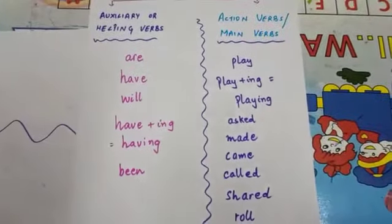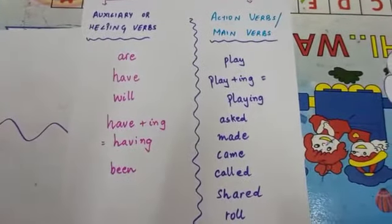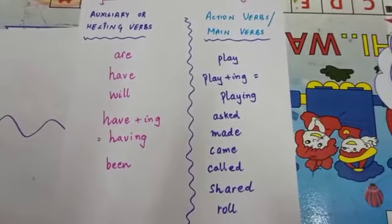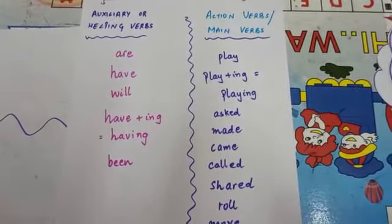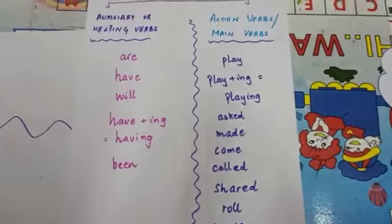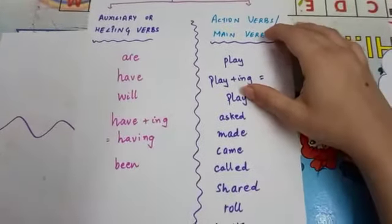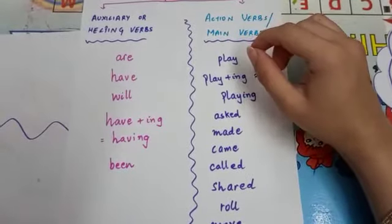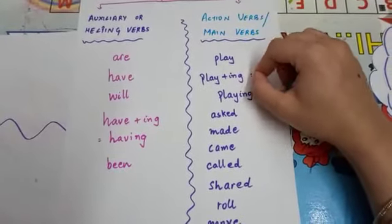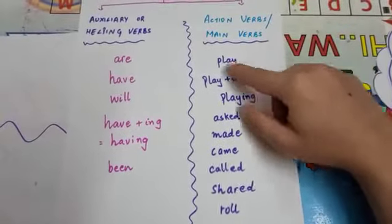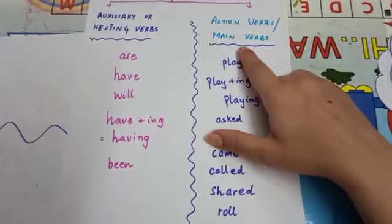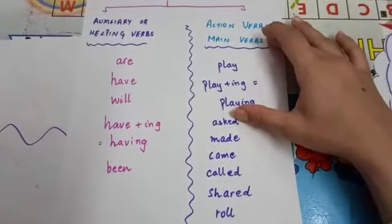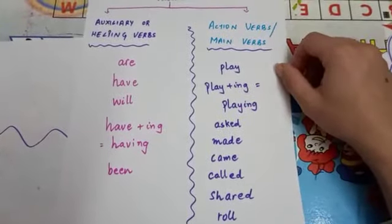I hope you all liked the story. Now, here is your task: you are all going to take an article from the newspaper, and underline the auxiliary verbs with 'A' and the action words with 'M.' Thank you everyone, then we meet again.